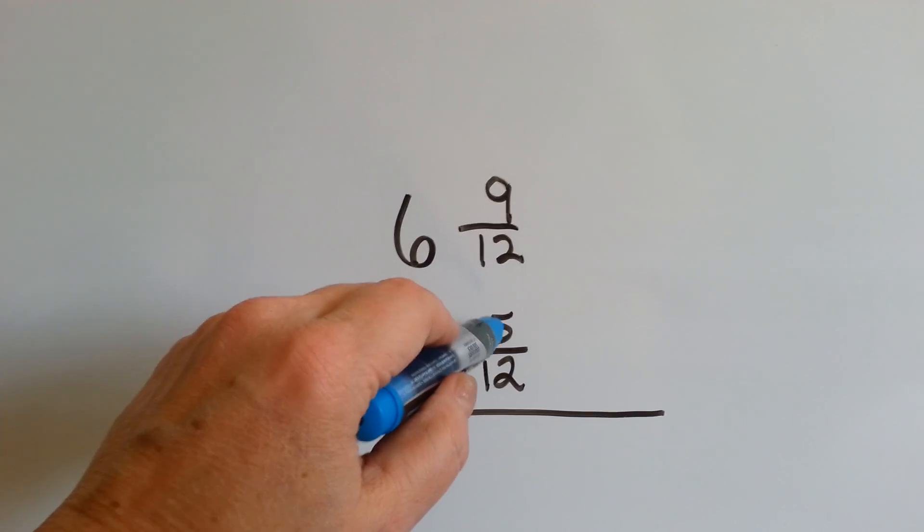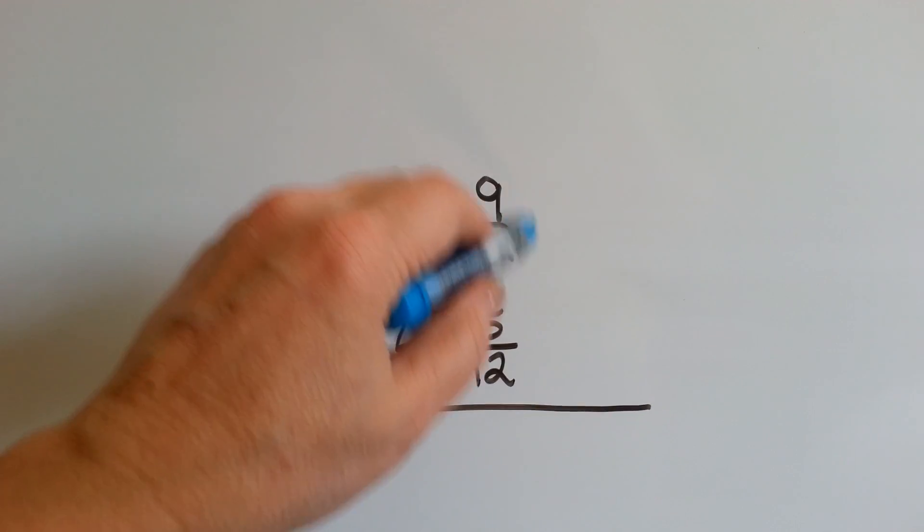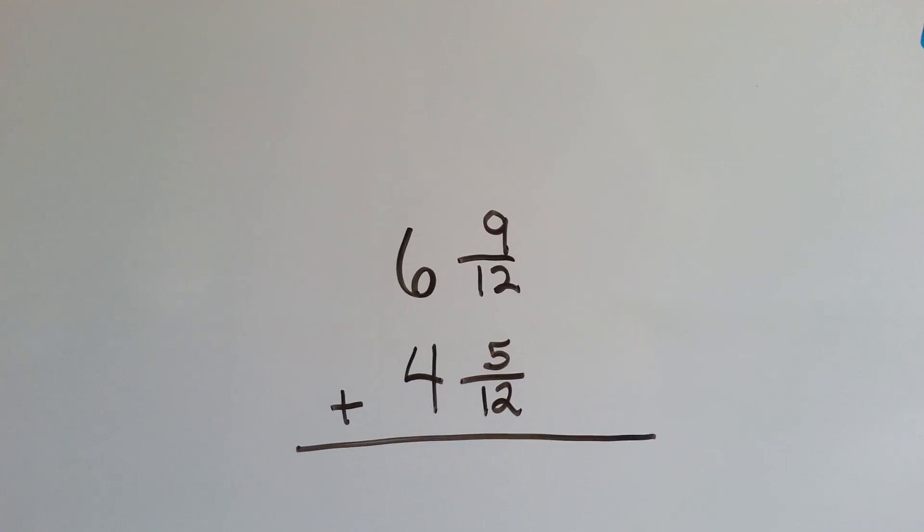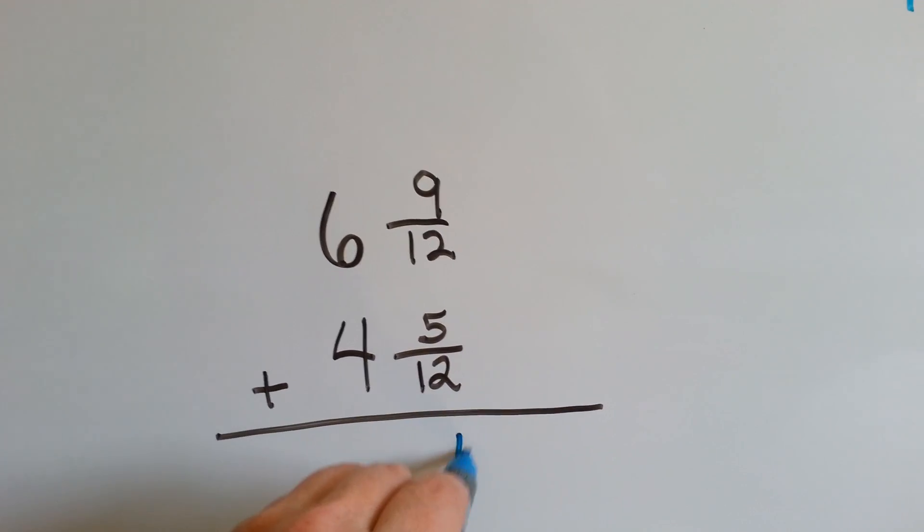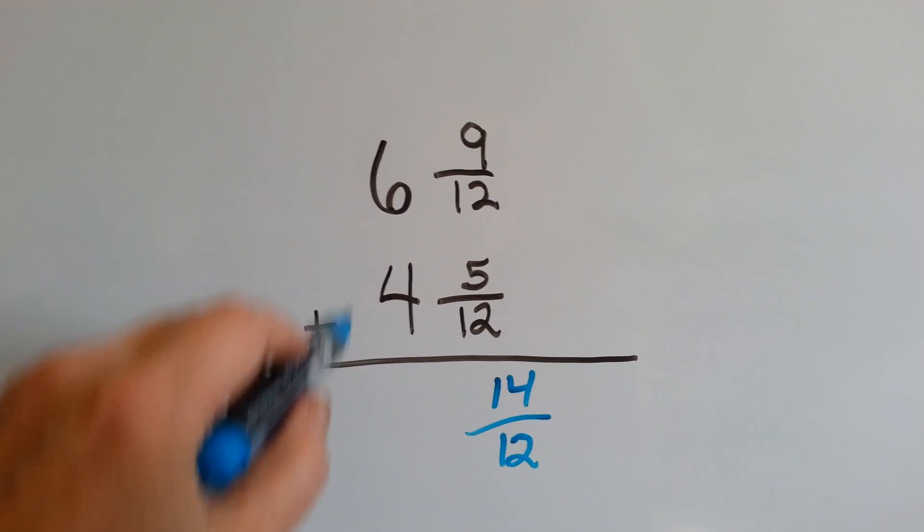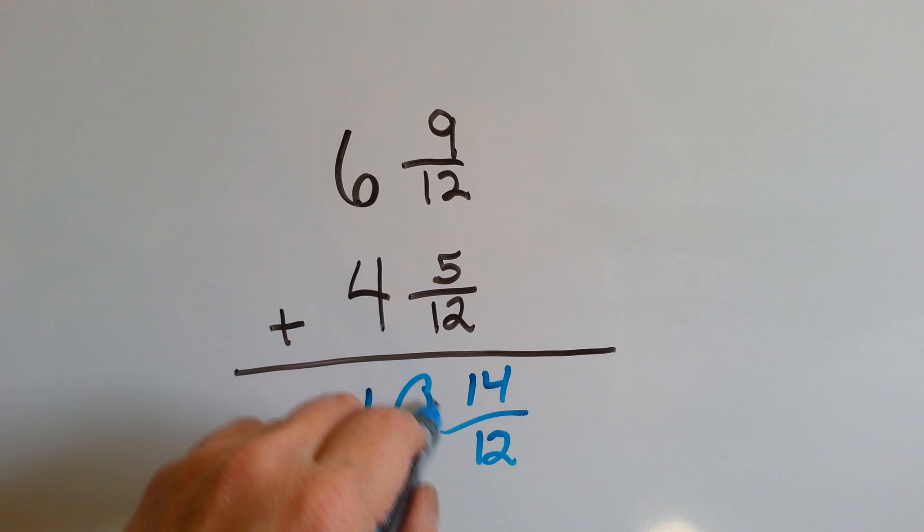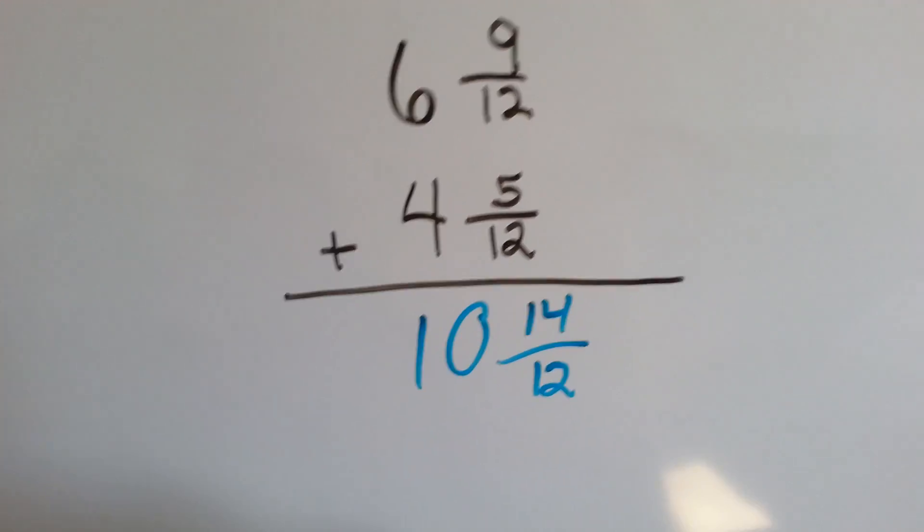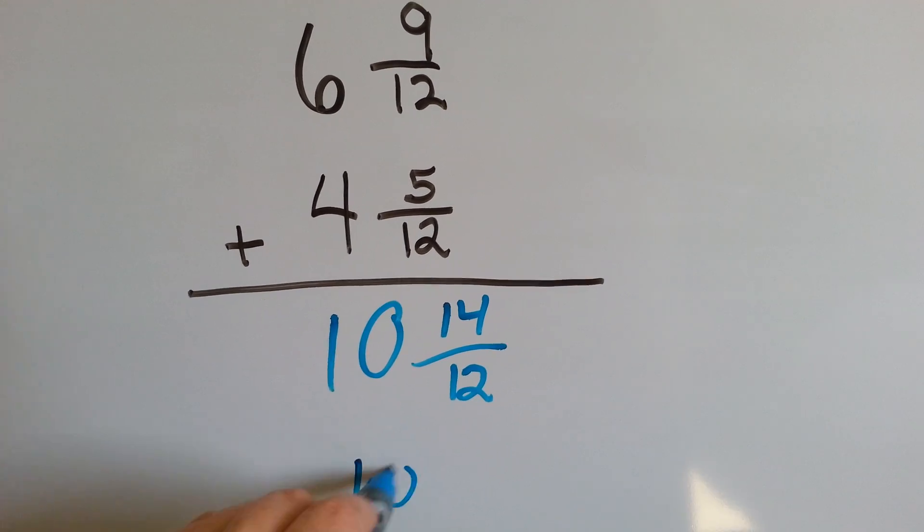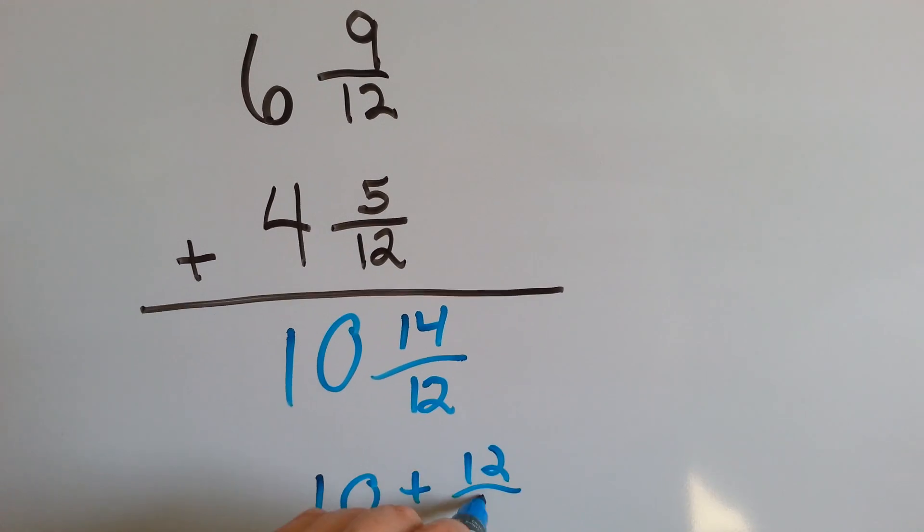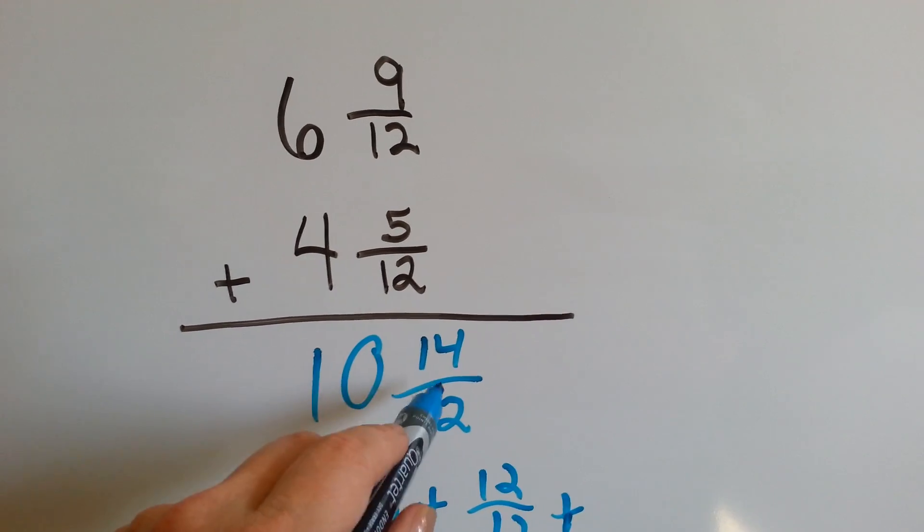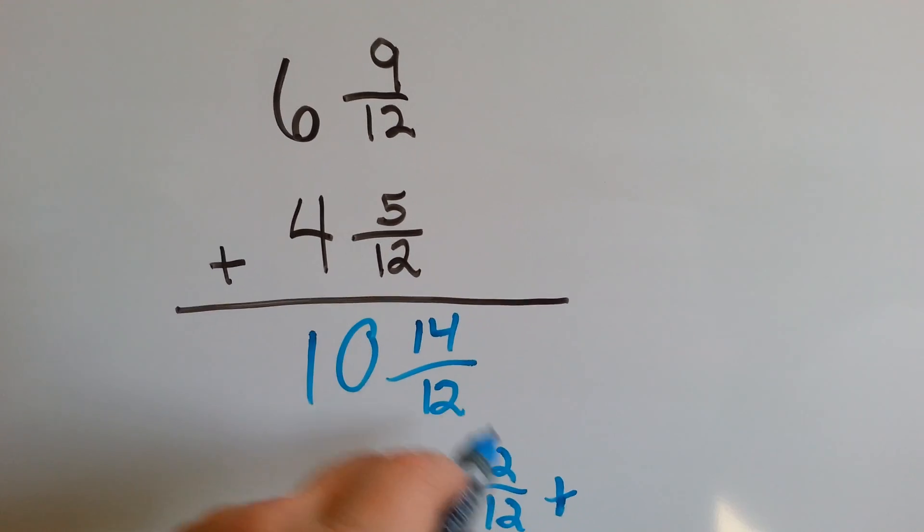We've got 9/12 and 5/12. What's 9 plus 5? Nine, ten, eleven, twelve, thirteen, fourteen. It would be 14/12. I can already see the 12/12 hiding in there. 6 plus 4 is 10. Let's rename and regroup. We've got to pull that 12/12 out of there. So now we've got a 10 plus a 12/12 plus what? What's left over after we pull the 12/12 out? A 2/12, right?